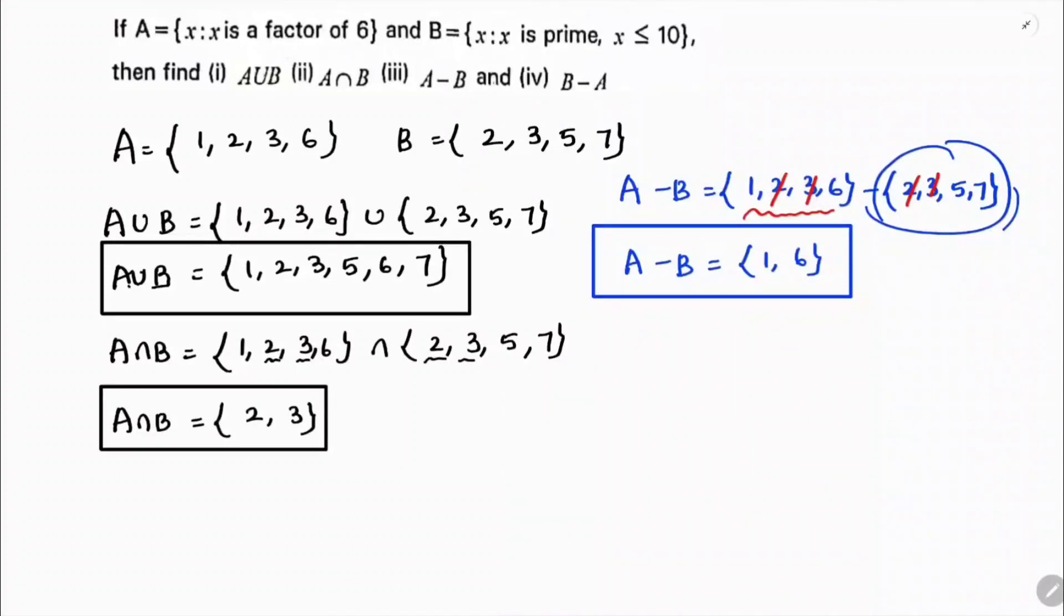In the same way, if I'll calculate B minus A, so B is {2, 3, 5, 7} minus A is {1, 2, 3, 6}. So here the common elements are 2, 3. If I'll cancel 2 and 3, so whatever is left on the left side, the two elements that are left, that is 5 and 7. So B minus A is {5, 7}. So in this way we need to find A union B, A intersection B, A minus B, and B minus A.